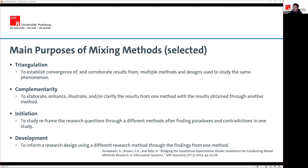A very different purpose is complementarity — you use one method to enhance, illustrate, elaborate, or clarify the results obtained from another method. For example, you carry out an experiment and get results but don't understand why, so you conduct follow-up qualitative interviews with participants to elaborate or clarify the experimental results. The idea is not to corroborate and triangulate, but to complement by explaining and illustrating the findings.